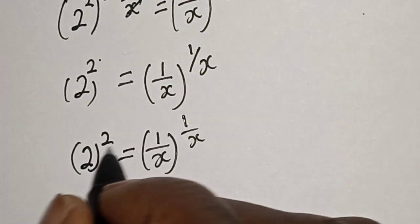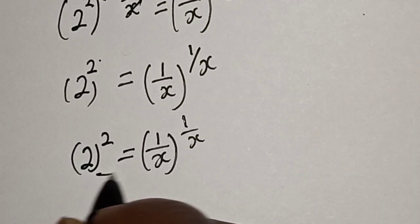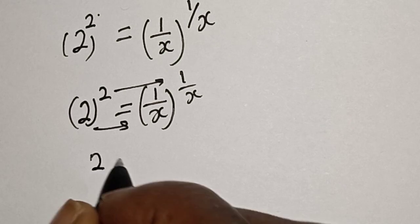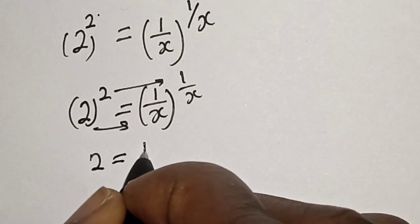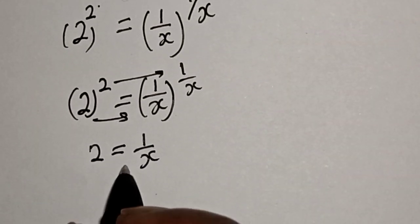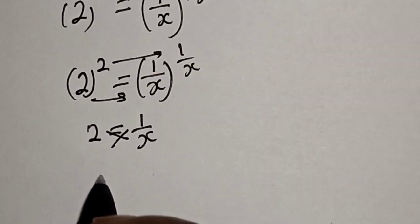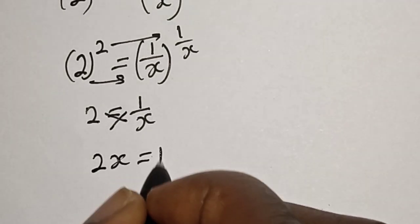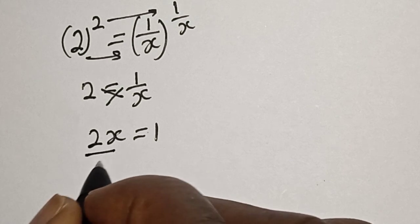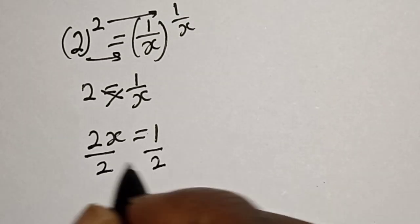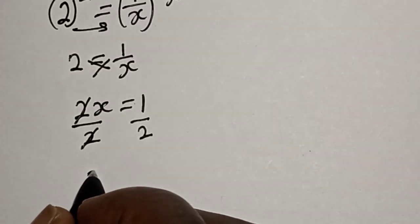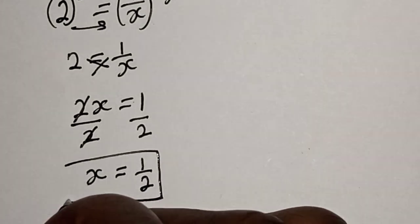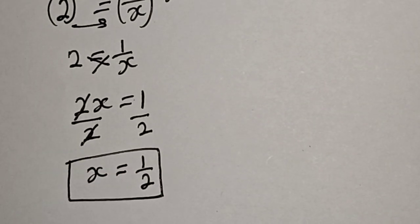By comparing, this exponent is equal to this exponent. Therefore 2 is equal to 1 over x. Now if you cross multiply, 2x is equal to 1, so x is equal to 1 over 2. That is our final answer. We can check to confirm if our answer is right or wrong.